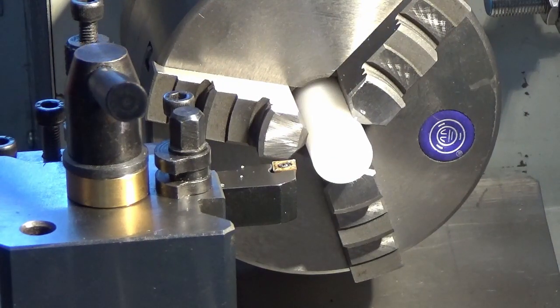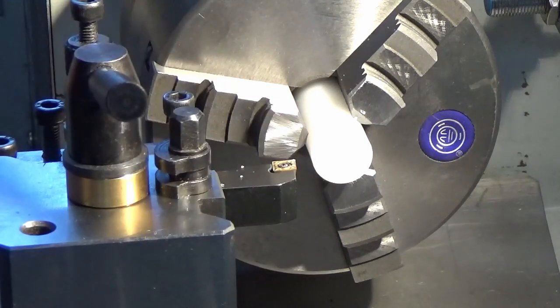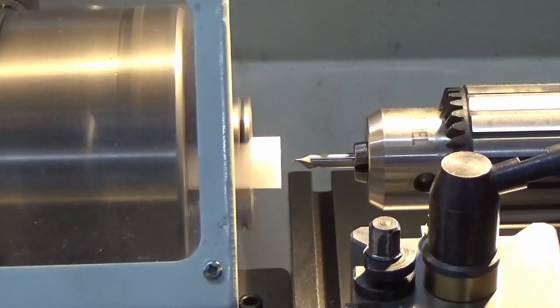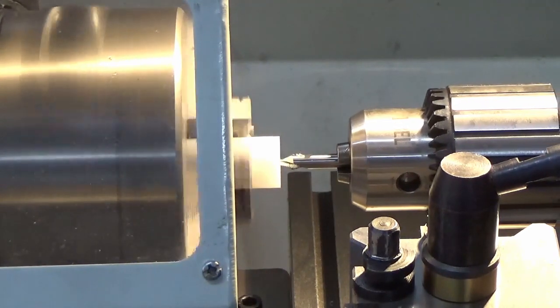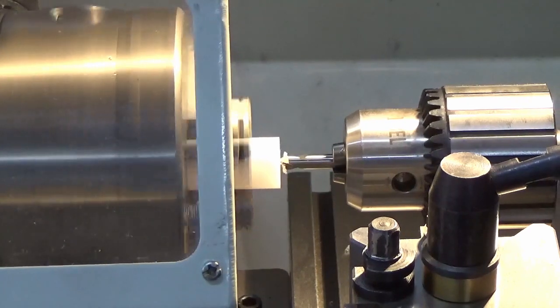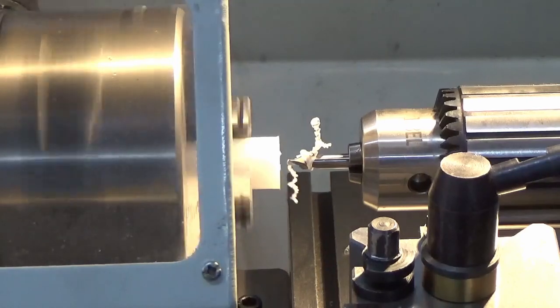Okay we've got it faced off now, so the next process that we have to do is to put the center hole in there. We're just going to put our center in so we can start the drilling process. That's all we need there to get the drill started.